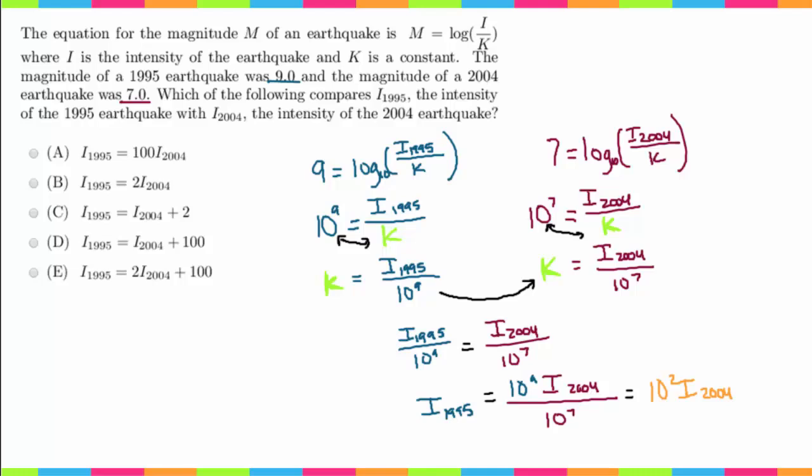10 to the second power is just 10 times 10, which is 100. So this equals 100 I to the 2004. So now we have—finally we're done—and we have this: the intensity of 1995 is equal to 100 times the intensity of the 2004 earthquake.